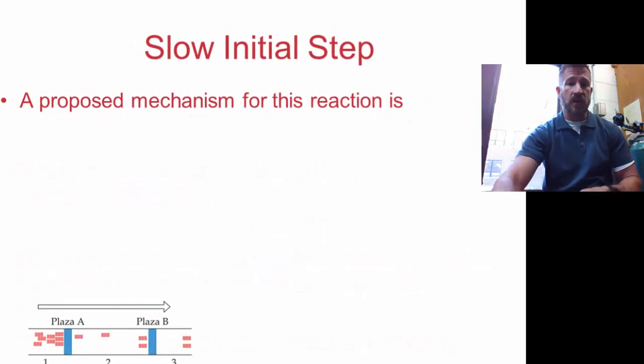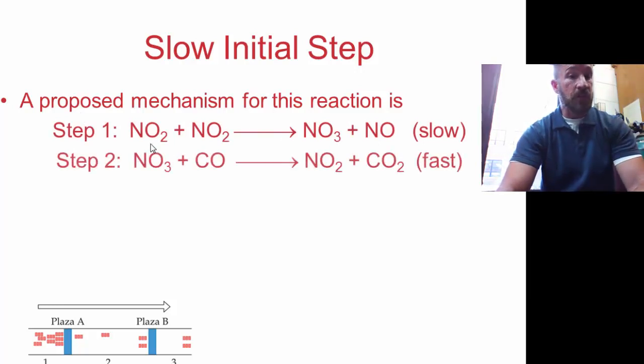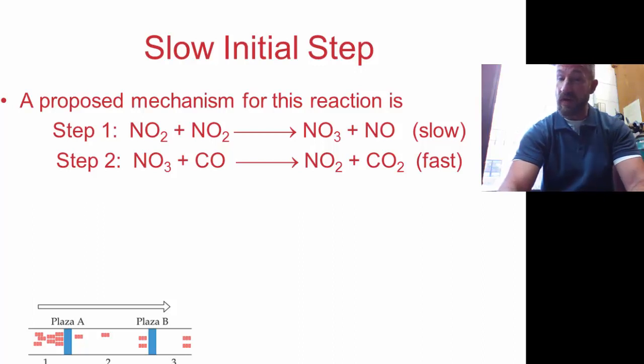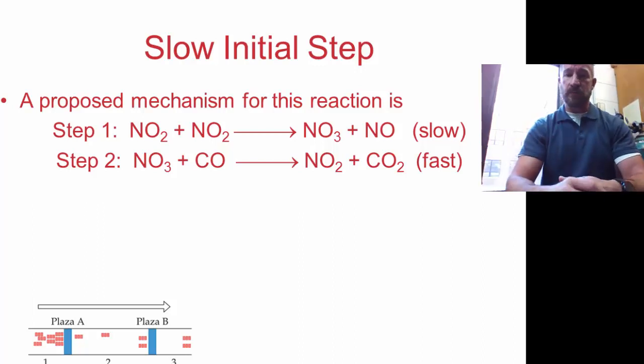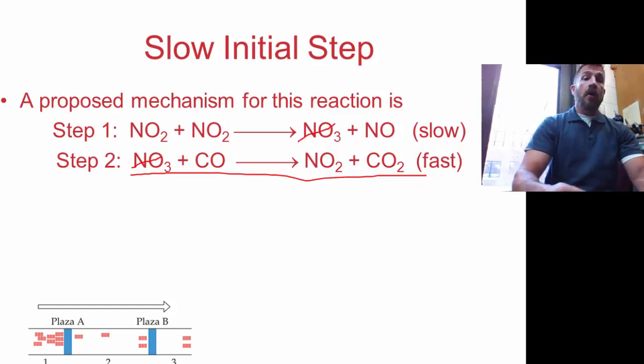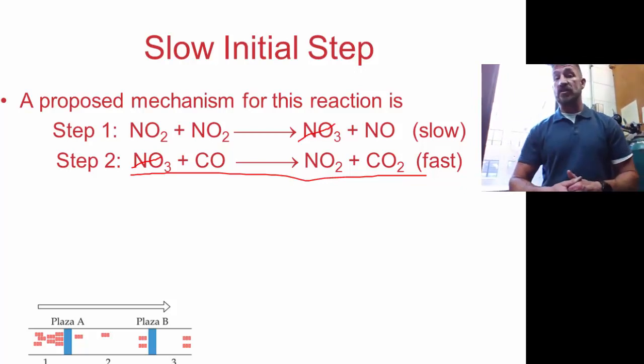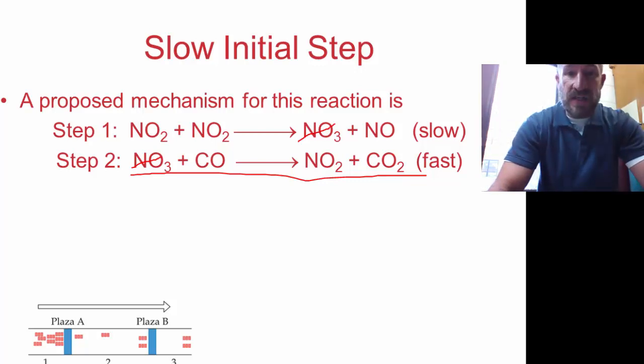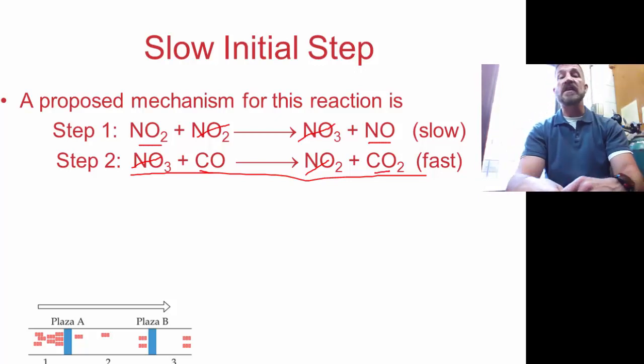So this suggests that the reaction occurs in two steps. And here we see a proposal for what the two steps are. We see a proposed mechanism is for step one: nitrogen dioxide reacts with nitrogen dioxide. In doing that it forms nitrogen trioxide and nitrogen monoxide. Now you notice nitrogen trioxide does not stick around very long. That combines with carbon monoxide and produces nitrogen dioxide and carbon dioxide gas. If you were to add these together you should get the overall reaction. Notice the NO₃ cancels and that means it's what we call an intermediate. Intermediates are produced in the reaction but they're also used up and they're not seen in the overall reaction. So nitrogen trioxide is an intermediate. Then notice we also see the nitrogen dioxide cancels out, and that gives us what we have in our final reaction.